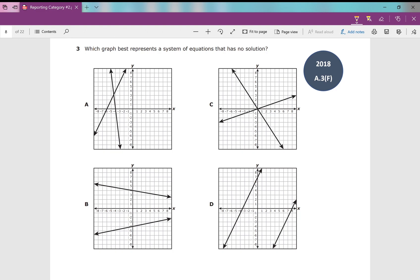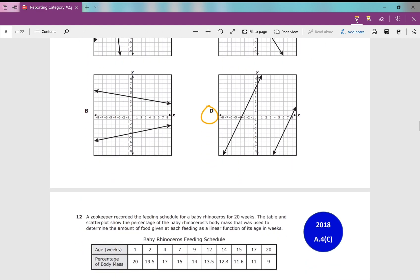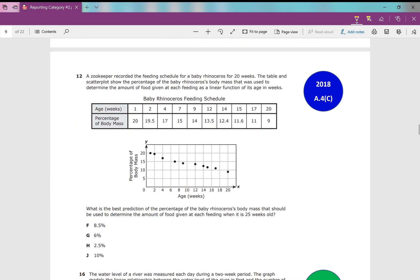Number three: Which graph best represents a system of equations that has no solution? A solution to a system of equations is the point at which the lines intersect. So a system of equations that has no solution would be a set of parallel lines. Parallel lines have the same slope. D is your answer. These two lines that are parallel will never intersect. Therefore they have no solution.